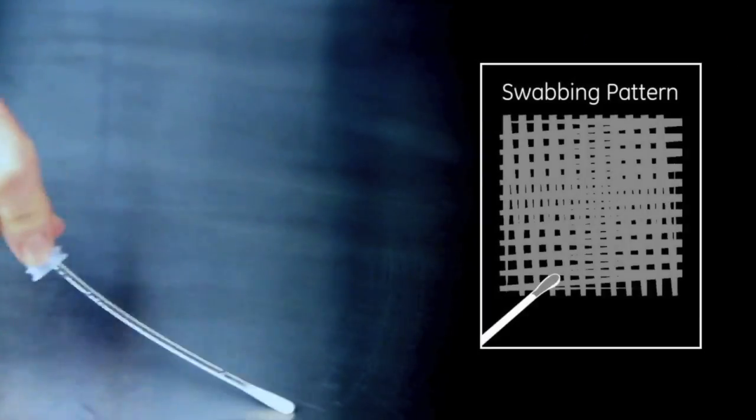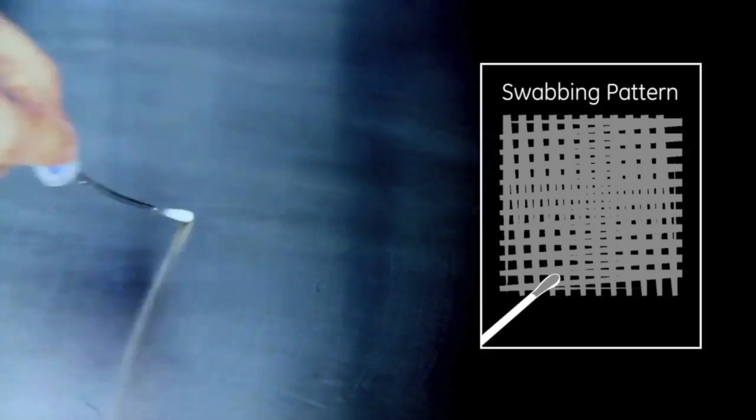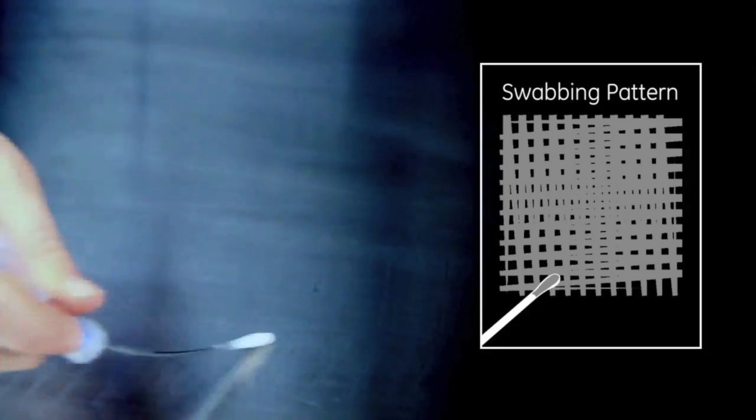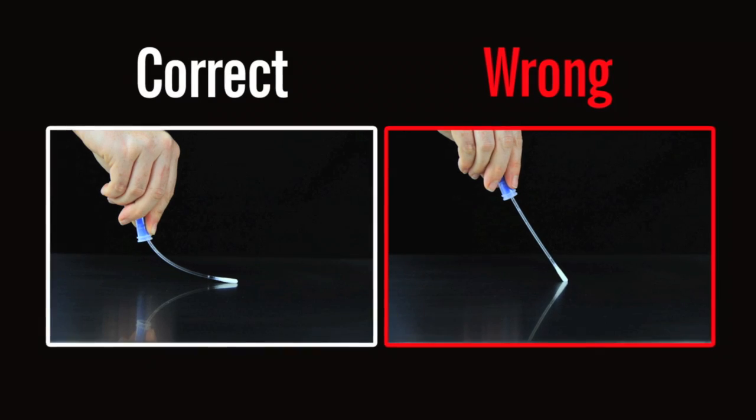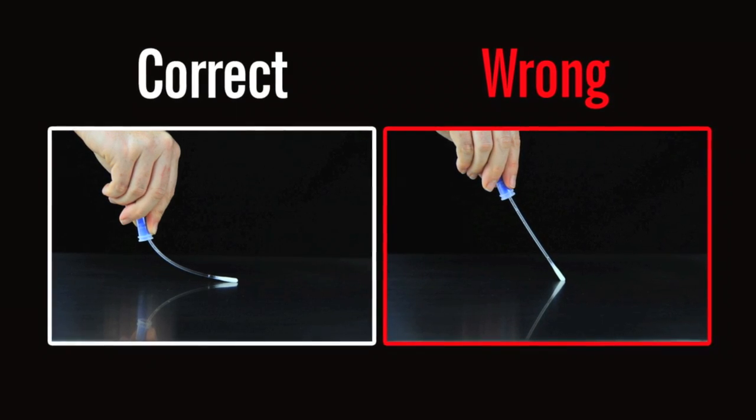Swab a 4 x 4 inch or 10 x 10 cm square area in a criss-cross pattern, swabbing the area with even coverage. Apply sufficient pressure to create flex in the swab shaft.